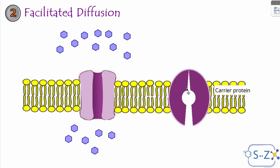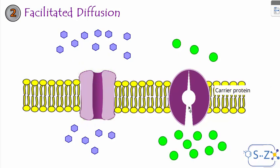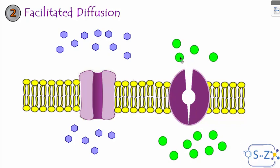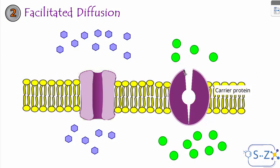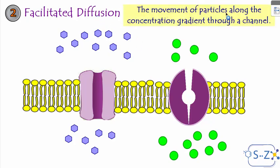Another example is the carrier protein. If molecules want to get out of the cell along the concentration gradient — from high to low — but are too big to fit through the plasma membrane, they pass through the carrier protein. The carrier protein changes its shape to allow the molecule to get out, and this is repeated until all molecules exit the cell. Facilitated diffusion is the movement of particles along the concentration gradient but through a channel or a carrier protein.